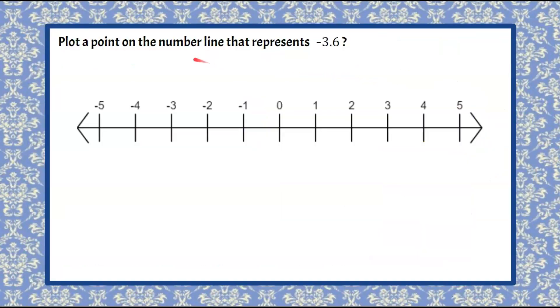We're asked to plot a point on the number line that represents this rational number value, negative 3.6. So to begin, we're going to identify which two integers does negative 3.6 lie between. I'm going to have you pause the video now, determine which two integers, and come back and hit play.